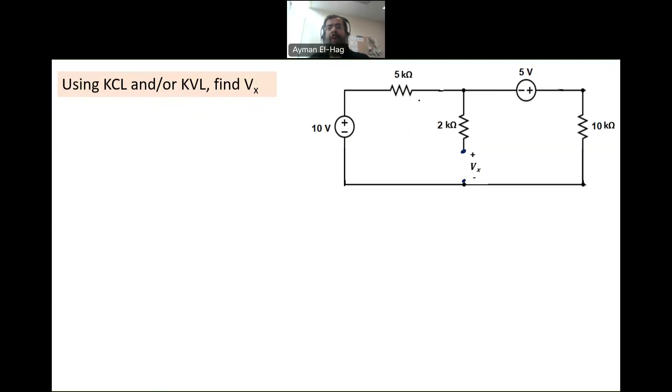So what we do, we assume a current. So we have the current I here. And this I will come to this node. Now, the current that goes down here equals zero because this is an open circuit. So there is no current. So it's exactly the same current I in this circuit. So we have only one loop, actually, and we'll have the current I.